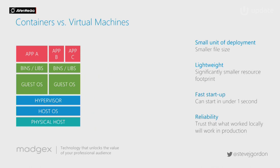One of the first comparisons people make is: what is the difference between containerization and virtual machines? On this diagram, the simplified VM stack has a physical host, a host OS, then a hypervisor layer — Hyper-V, VMware — which abstracts the hardware so you can share it among different hosts. You install a guest operating system into each VM, any dependencies, and then your application. In some cases it's a single app to a single VM, like SQL Server, but you may also run multiple applications on a single VM.